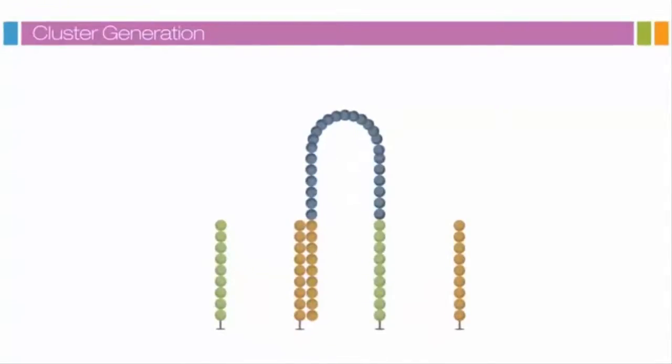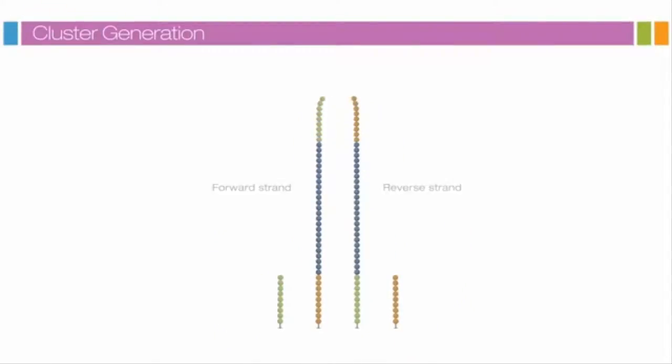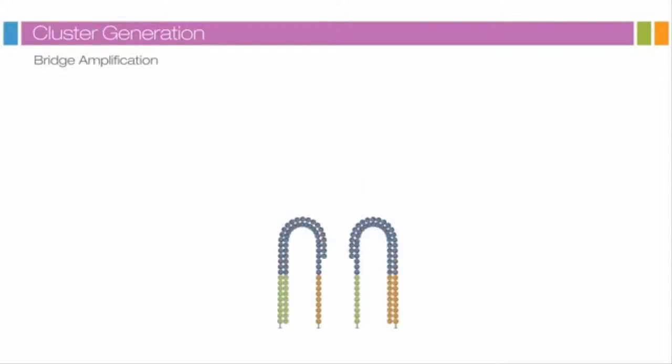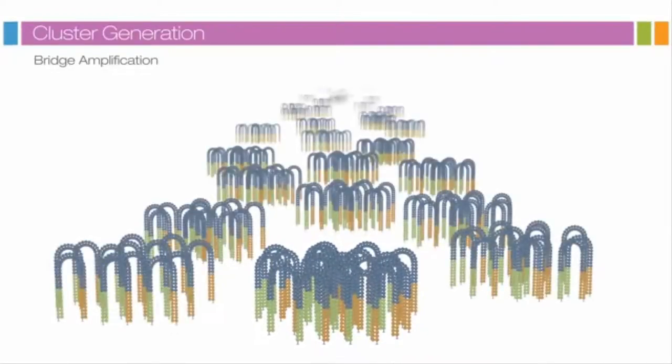The strands are clonally amplified through bridge amplification. In this process, the strand folds over, and the adapter region hybridizes to the second type of oligo on the flow cell. Polymerases generate the complementary strand, forming a double-stranded bridge. This bridge is denatured, resulting in two single-stranded copies of the molecule that are tethered to the flow cell. The process is then repeated over and over, and occurs simultaneously for millions of clusters, resulting in clonal amplification of all the fragments.